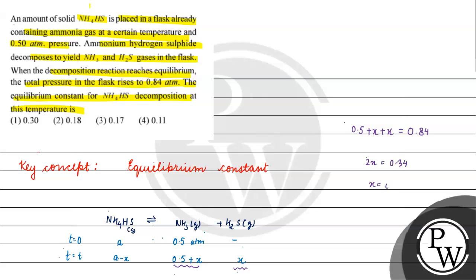X is equal to 0.17 atm. The partial pressure of ammonia would be 0.5 plus 0.17, which is 0.67 atm, and the pressure of H2S is 0.17 atm.